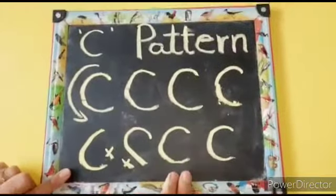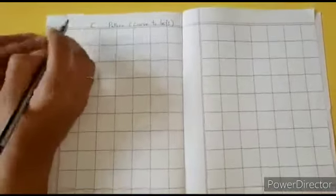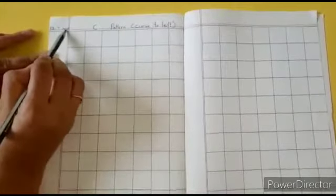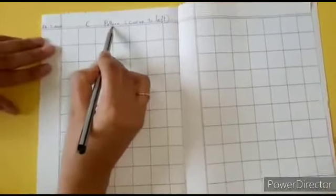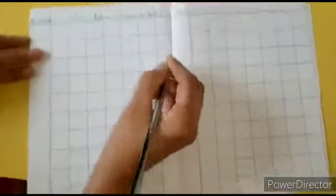That's all about the C pattern on slate. Now we will introduce the square line book. This is a square line book. The red vertical line you can see is called the margin. We are not supposed to write inside the margin. At the top left of the margin, we write the date. The heading is C pattern or curve to left. Let us see how to fit this C pattern in the square.